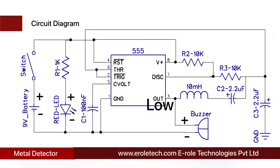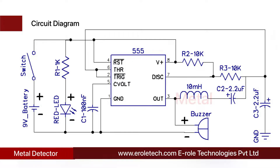In the circuit there is an RLC circuit formed by a 10 kilo ohm resistor, a 2.2 microfarad capacitor, and an inductor. This RLC circuit is the metal detection part. The inductor is made by winding a copper coil without any core, so it is called an air core inductor. When a metal piece is brought near the coil, the metal piece acts as a core for the air core inductor, causing the inductance of the coil to change or increase considerably.